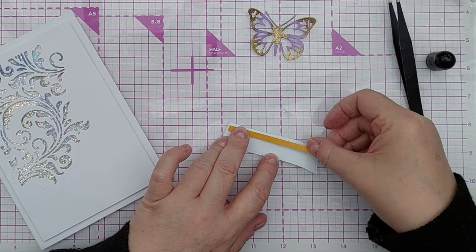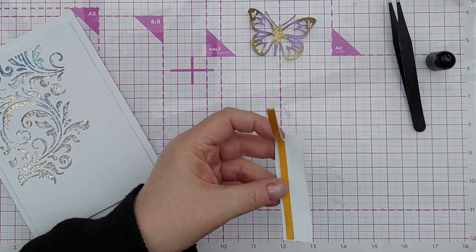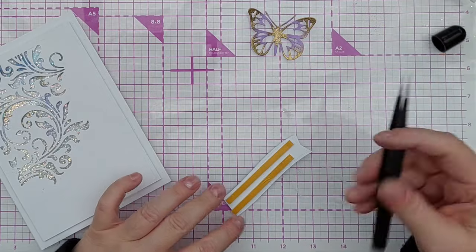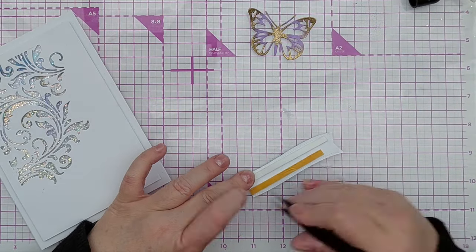Next, I added my banner. I had chopped off one end to make a straight edge. I added some foam tape and then popped it about two thirds of the way up on the left hand side across the aperture.